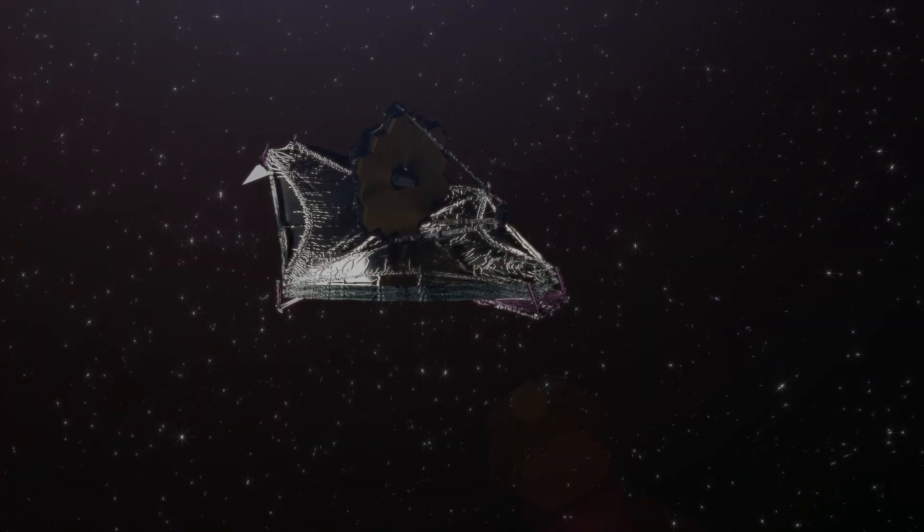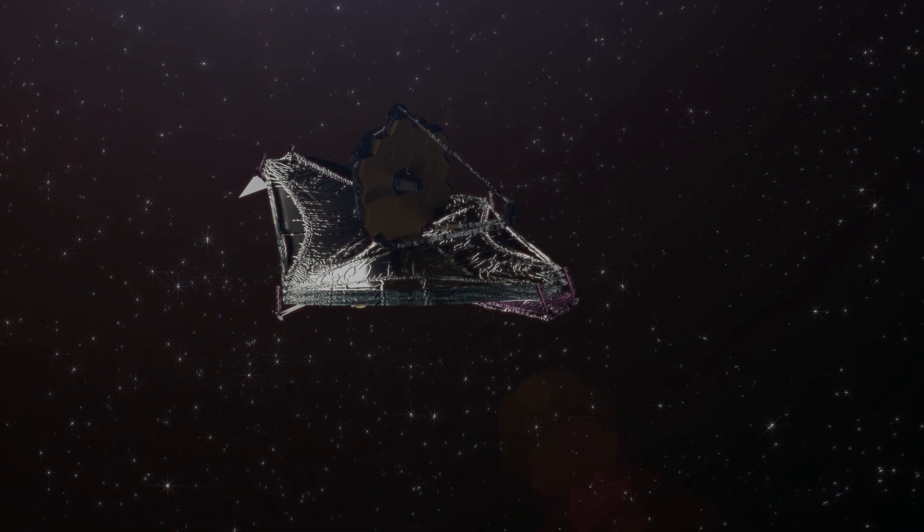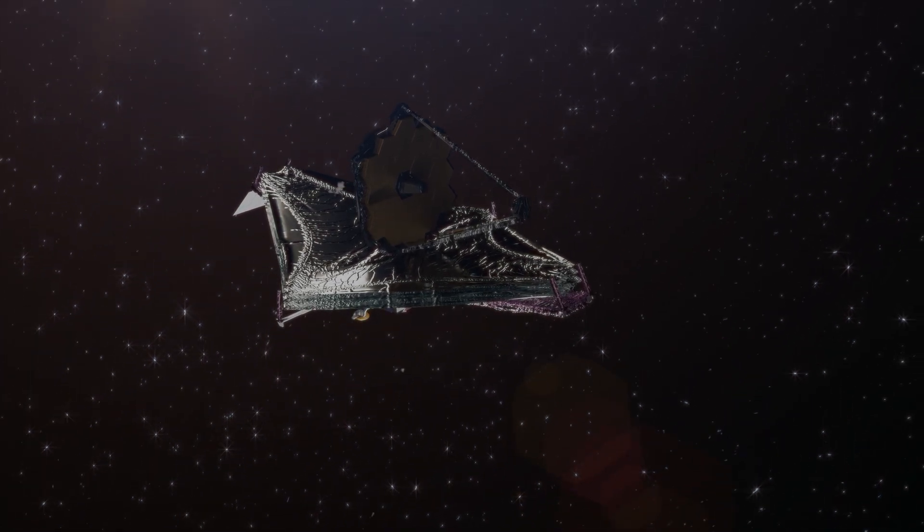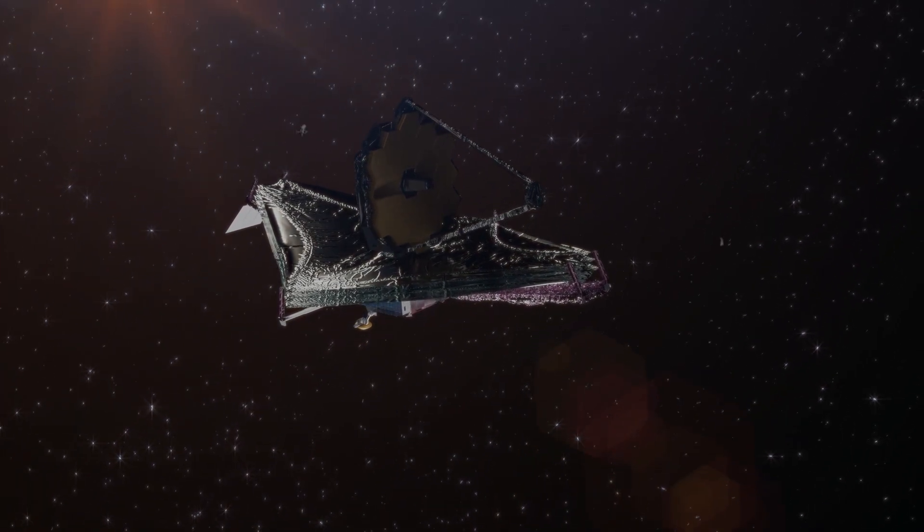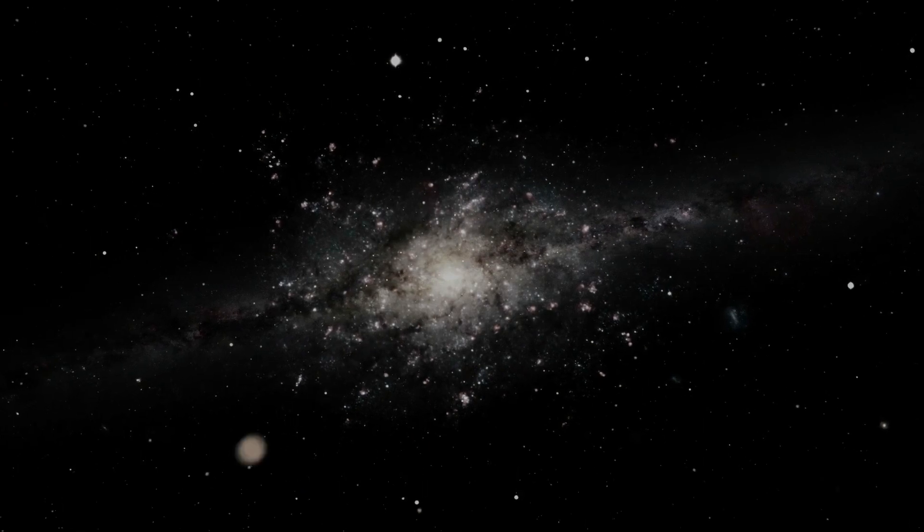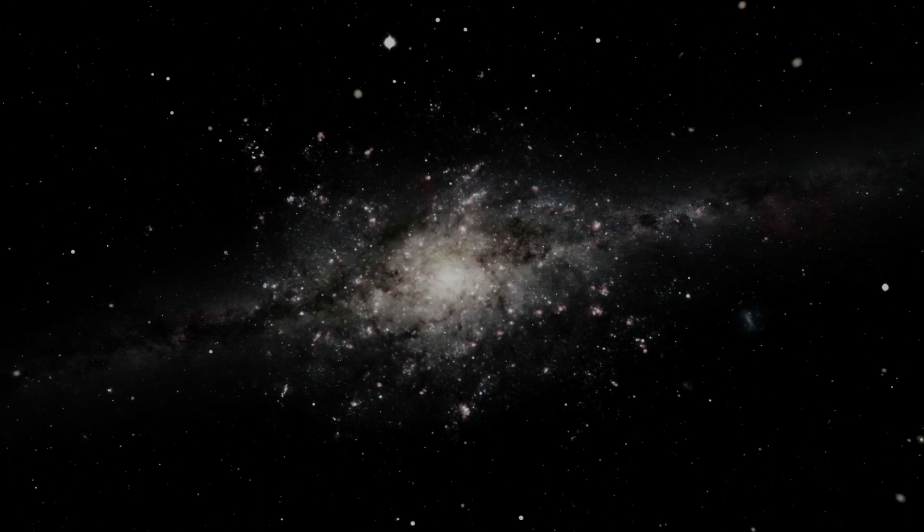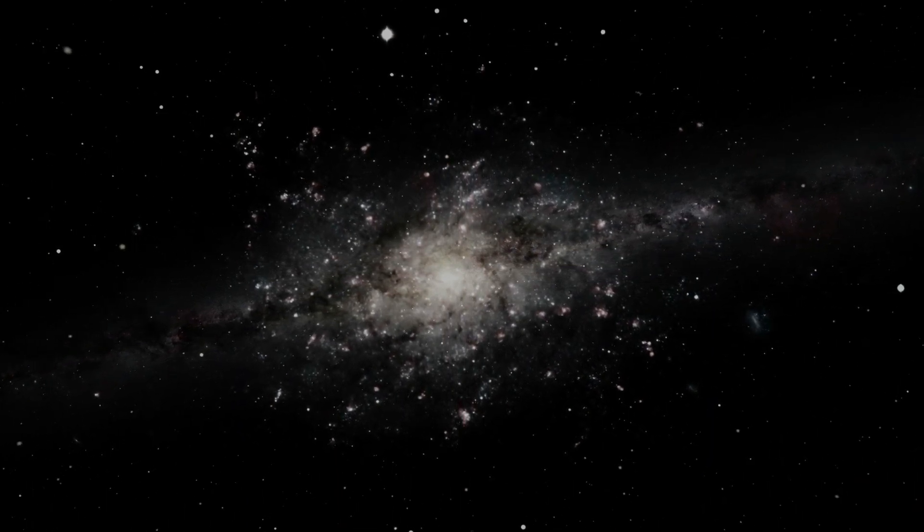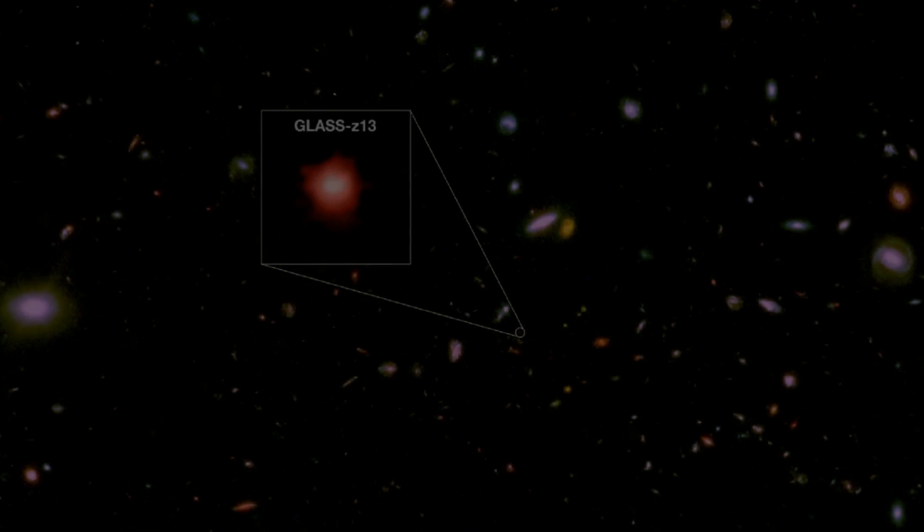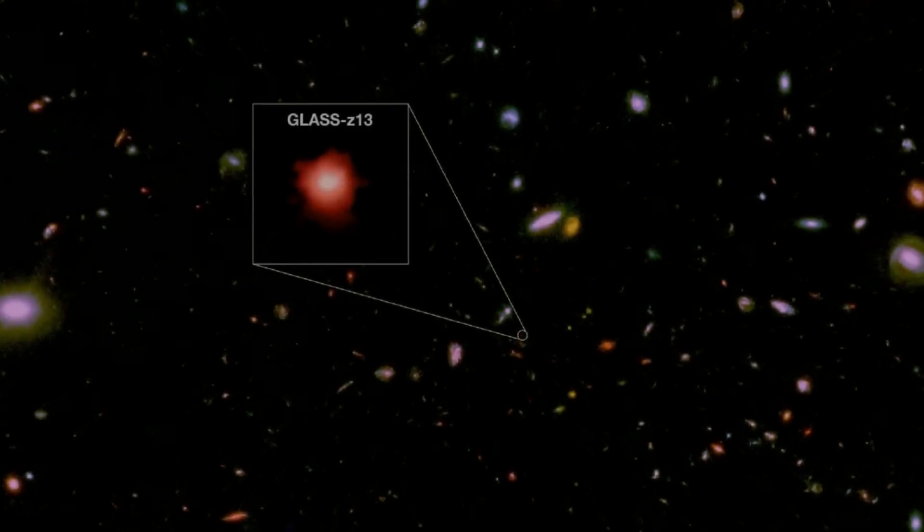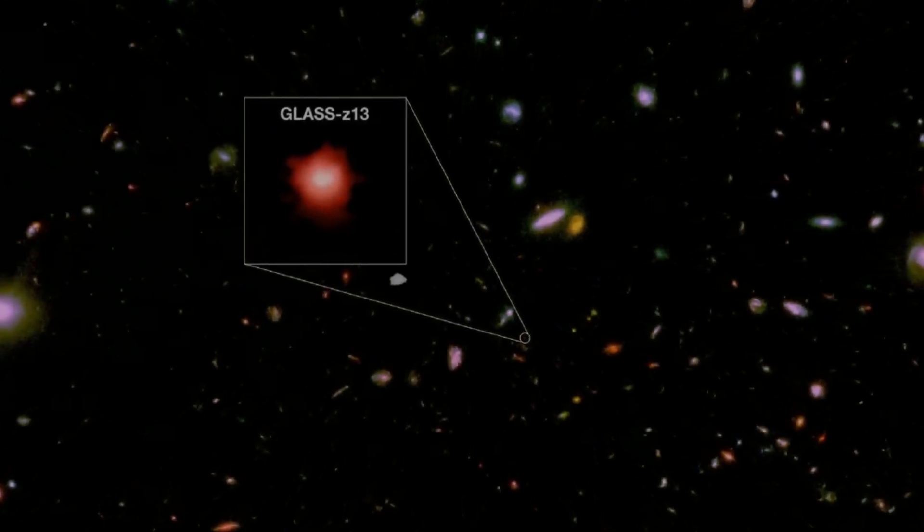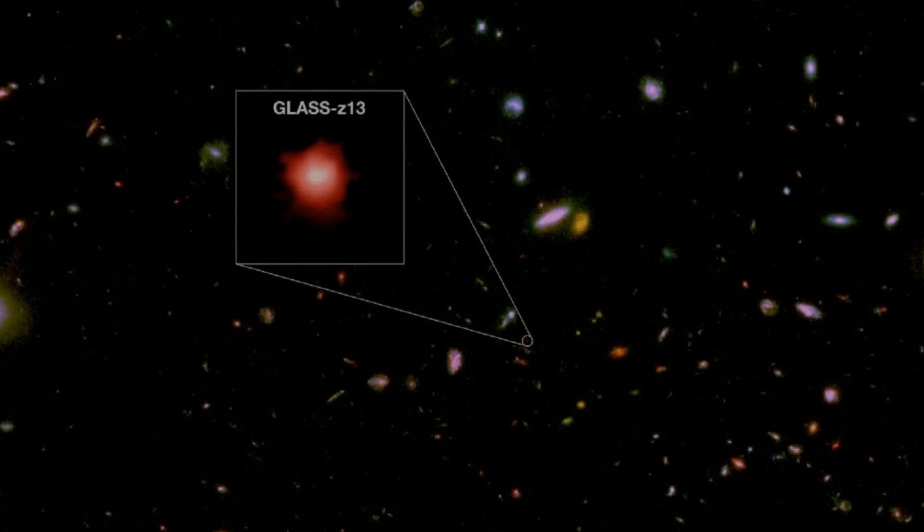The initial photographs captured by the James Webb Space Telescope have ignited intense debates within the scientific community. They depict visuals of six ancient galaxies believed to have existed at the dawn of time, thereby challenging established theories about the universe's inception. Take, for example, the galaxy GLASS-Z13, which materialized a mere 250 to 350 million years after the Big Bang, contradicting prevailing notions that galaxies require billions of years to form.